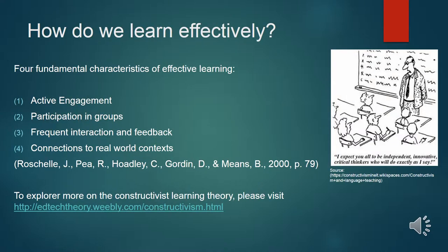Constructivist theories on learning have provided a basis for understanding how learning can be effective. To quote Rochelle, Holiday, Gordon, and Means (2000), cognitive research has shown that learning is most effective when four fundamental characteristics are present: one, active engagement; two, participation in groups; three, frequent interaction and feedback; and four, connection to real-world contexts. These characteristics are key to selecting the right technology for facilitating the personalized learning of children.